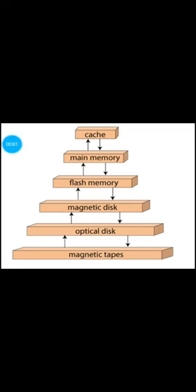As we all know, there are three types of memory: primary, secondary, and tertiary memory. Cache and main memory come under primary memory. Cache is the fastest memory, and these memories are volatile in nature.